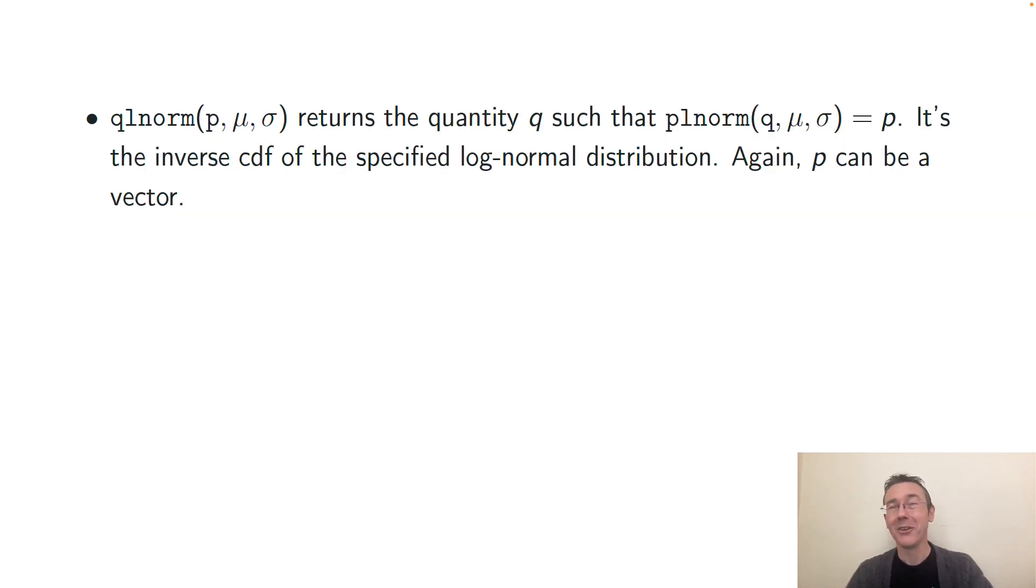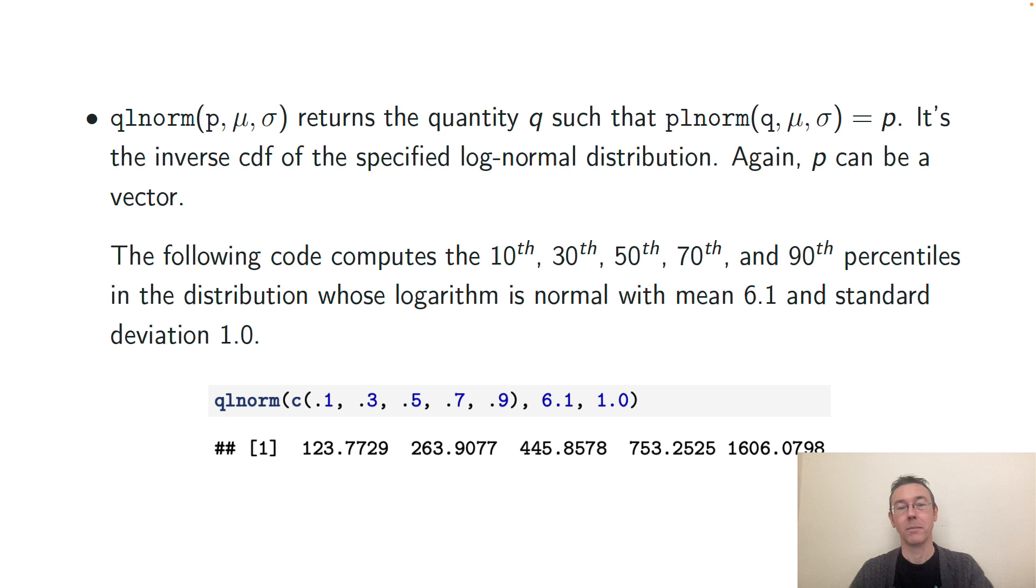The inverse plnorm is qlnorm. That's going to return the quantity q such that plnorm of q with the corresponding parameters is p. So again, it's the inverse CDF of the specified log-normal distribution. And just like with plnorm, with qlnorm, the value you put in, p in this case, can be a vector. So here's some code to compute the 10th, 30th, 50th, 70th, and 90th percentiles in that same log-normal distribution.